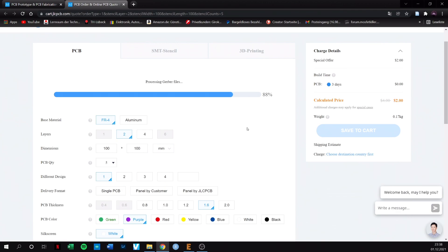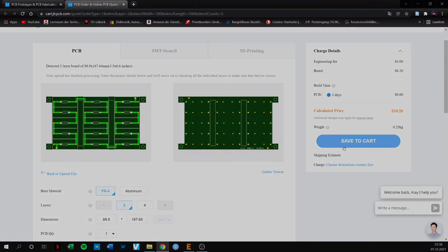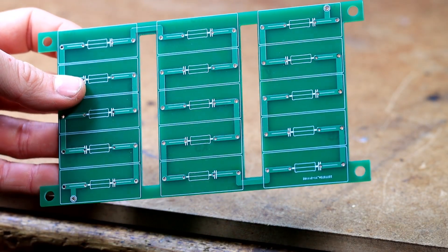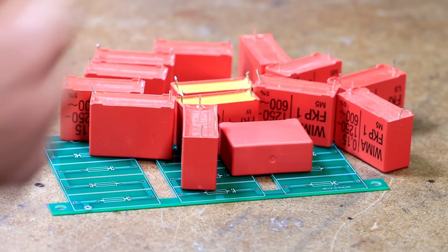If you register at JLCPCB via the link in the video description you will get 4 coupons with a total value of $27. For now I will assemble the PCB.